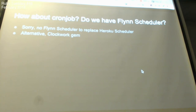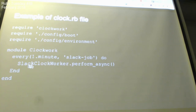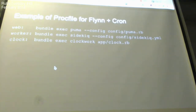How about cron jobs? There is no built-in scheduler like Heroku Scheduler. As an alternative, you implement it in your app using a gem. I found one called the Clockwork gem. You have one file called clock.rb inside your app folder and declare tasks using a cron-like syntax. For example, every one minute, call a Sidekiq job. You then declare a clock process in your Procfile: 'bundle exec clockwork /path/to/clock.rb'.